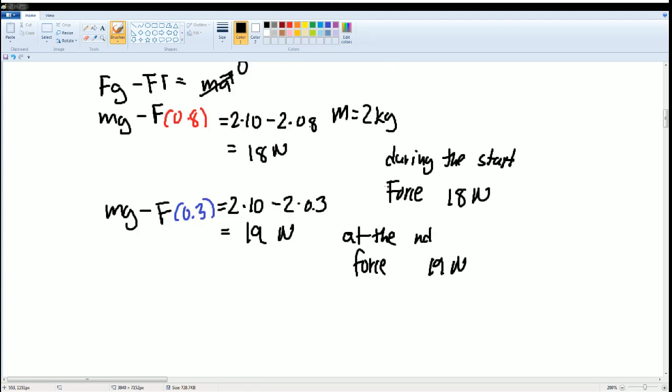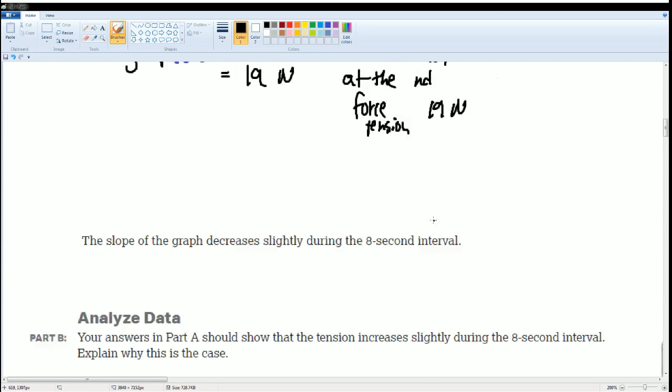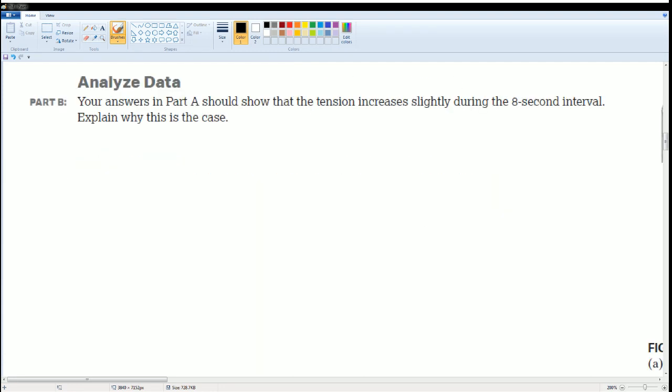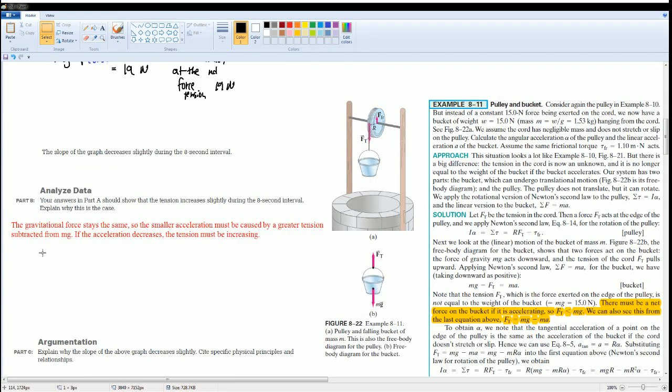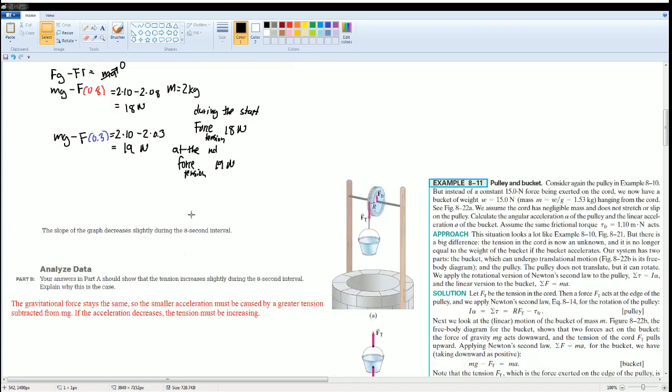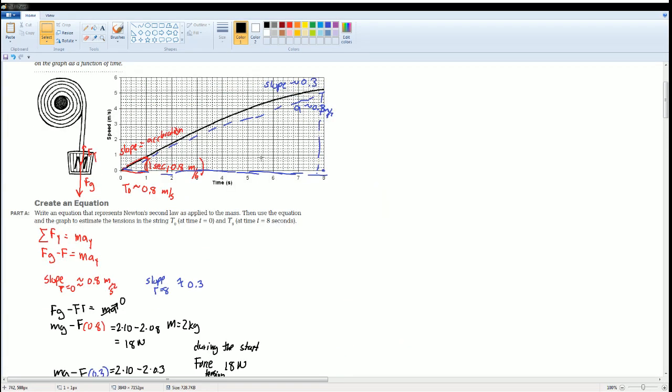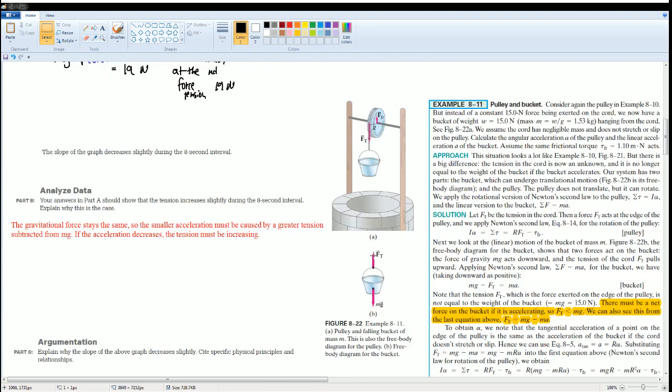So do you see here? Force of tension is increasing slightly. Why is that? I say the gravitational force stays the same. So the acceleration must be caused by a greater tension. Subtract that from MG. If the acceleration decreases, then the tension must increase. That is the reason why. So if the tension increases, the acceleration must decrease. That is the reason why. Because they're opposite forces. If you want to look at these notes.